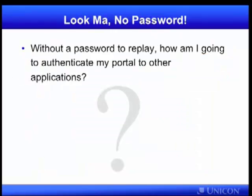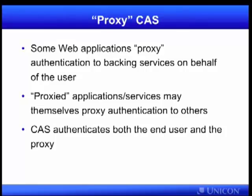With CAS, there's no password to replay. How can my portal authenticate on my behalf to other applications? CAS has a feature for this called proxy CAS. Some web applications proxy authentication via CAS, using CAS as that trusted intermediary to backing services on behalf of the user. These proxied applications and services can themselves proxy authentication, so you can have a whole stack of turtles. If your portal needs to proxy authentication to a webmail application, which in turn proxies authentication to the IMAP server, that chain is entirely viable. CAS authenticates both the end user and the service or services in the proxy chain, and it does this without replaying the end user's password.